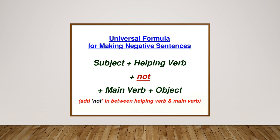The fourth general rule: if a sentence contains 'has,' 'had,' or 'have' showing possession, the negative sentence can be formed in two ways. For example, 'I have a computer' can become 'I have no computer' or 'I do not have a computer.' I hope these general rules are clear to you all.